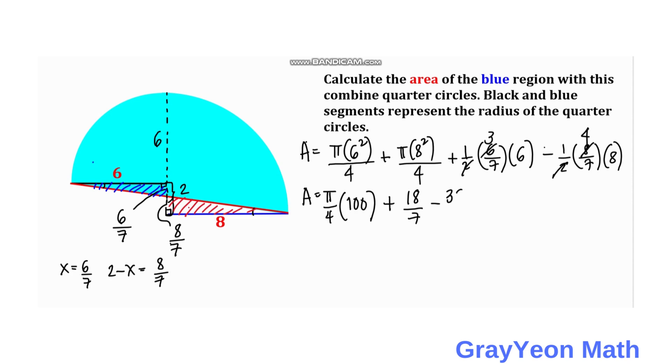This becomes 4 times 8, so 32 minus 32/7. If we combine this, 18 minus 32 becomes -14, so -14 divided by 7 becomes -2. We have area equals π/4 times 100, and that would be 25π minus 2 square units.